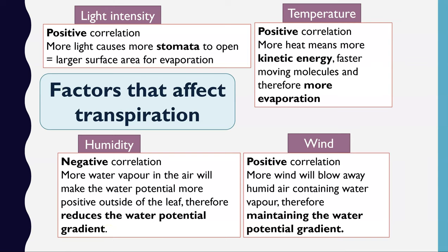Wind is the opposite idea, which is why there is a positive correlation. The more windy it is, the faster the rate of transpiration. That is because wind or air movement carries away the water vapour surrounding the leaf. Without that saturated air, the water potential gradient is maintained and therefore more water can evaporate out.